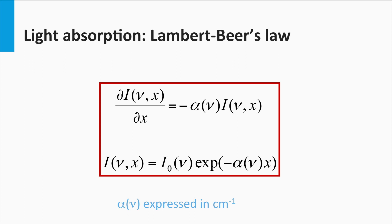Or presented in another way, over an infinitely small distance dx, the decrease in the light intensity due to absorption, dI/dx, is equal to the product of the absorption coefficient and the light intensity at position x. This is the differential form of the Lambert-Beer's law.